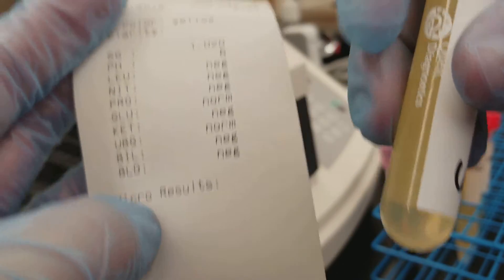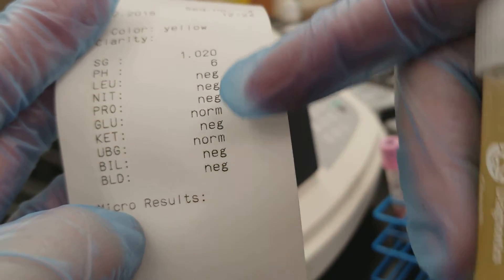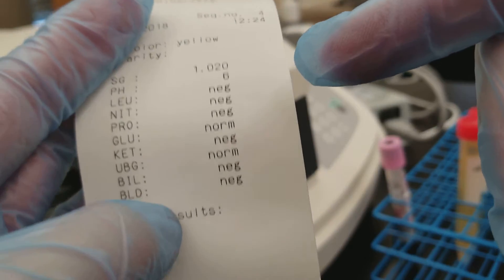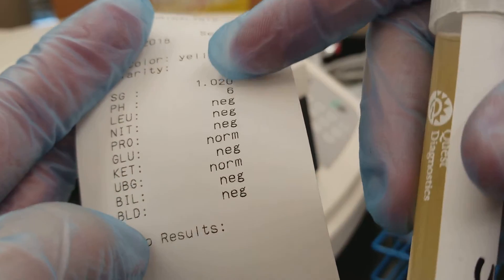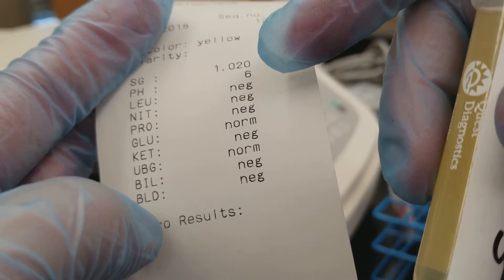And everything is negative and normal so if this was a patient that just got a dipstick this guy would be fine. Specific gravity is in normal physiological range which is 1.005 to 1.030. Anything else you'd want to check it with a refractometer.